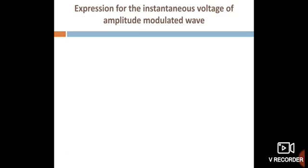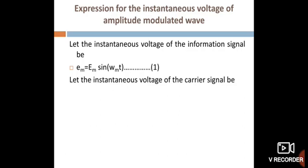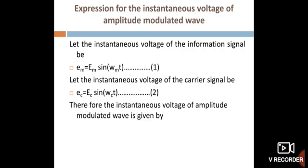Expression for the instantaneous voltage of amplitude modulated wave. Let the instantaneous voltage of the information signal be: Em = Em sin(ωm × t). Let the instantaneous voltage of the carrier signal be: Ec = Ec sin(ωc × t). The phase angle remains the same, hence it is not considered in both expressions.